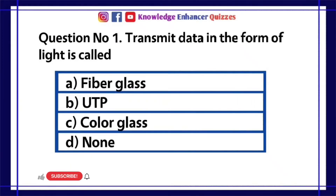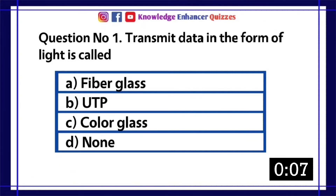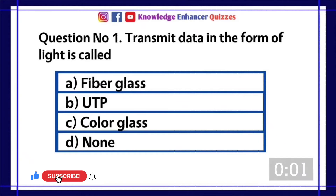Question number 1. Transmit data in the form of light is called. A fiberglass. B UTP. C color glass. D none. Option A is the right answer.